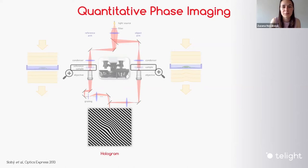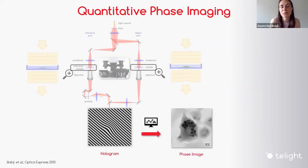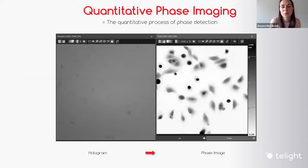It would be quite strange to look at cells using holograms. So from holograms — because holograms store complete information about the transmitted light — you can easily reprocess the phase image. This is a nice way to look at cells. Here is an example when you do this for a whole cell population: on the left there is a hologram of a cell population and on the right there is a phase image reprocessed from such a hologram.